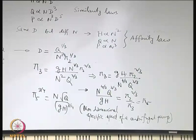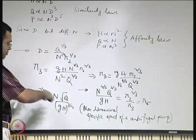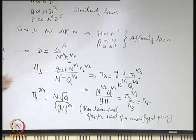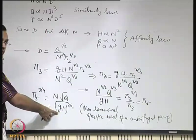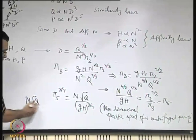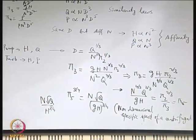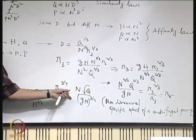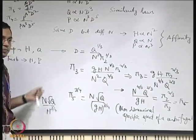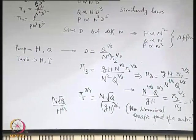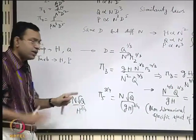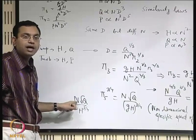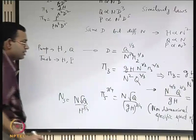This is a non-dimensional specific speed of a centrifugal pump. If you want to write it with n as a prominent parameter, take the 3/4 power of Pi₅. So Pi₅^(3/4) = n·√Q / (gh)^(3/4). This is known as the non-dimensional specific speed of a centrifugal pump.